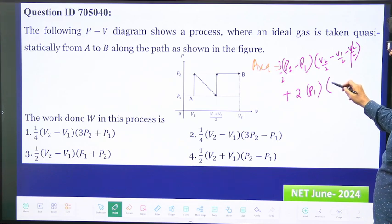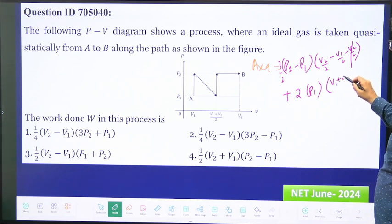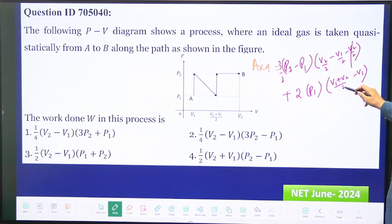v1 plus v2 by 2 minus v1, and this can be just, remove this, it will be v2 by 2 minus v1 by 2.